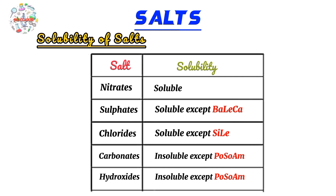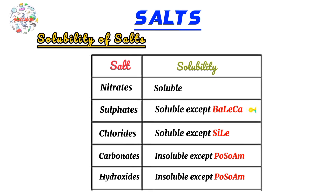Number two: sulfates. Sulfates are soluble except for these three — barium sulfate, lead sulfate, and calcium sulfate. Barium sulfate and lead sulfate are insoluble, but calcium sulfate is slightly soluble.